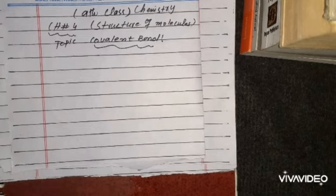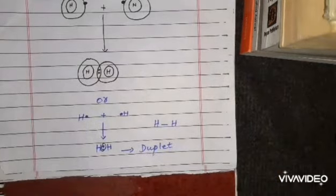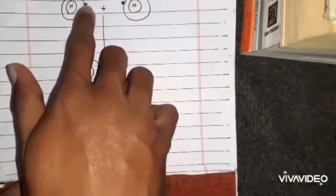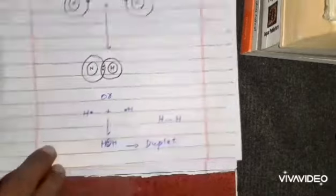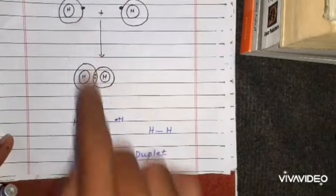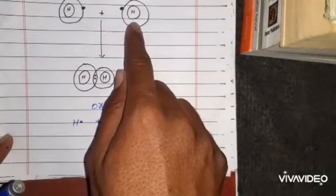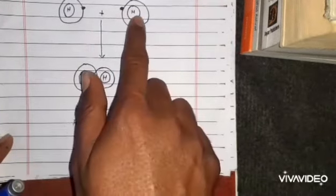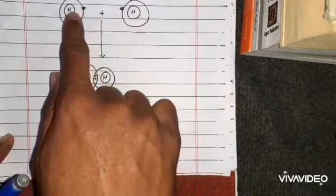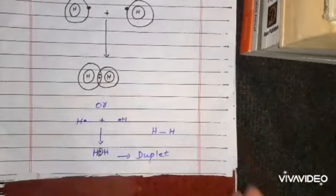Atoms like to share electrons. We see here the example of hydrogen atom. Hydrogen has only one electron in its outermost shell. To satisfy its duplet rule, it needs to share one electron with another hydrogen atom, and that hydrogen atom will share its electron back. So after sharing, they both have two electrons in the outermost shell.